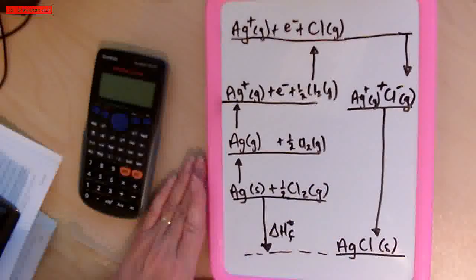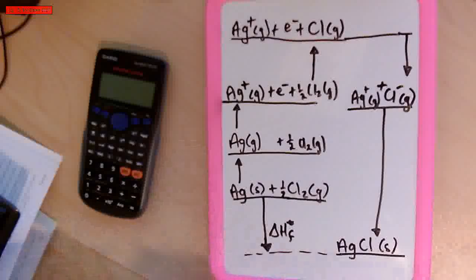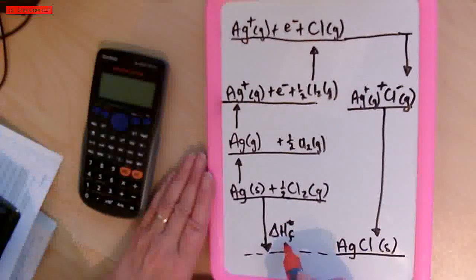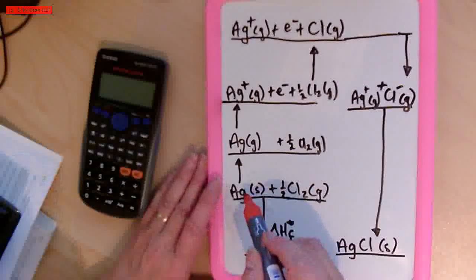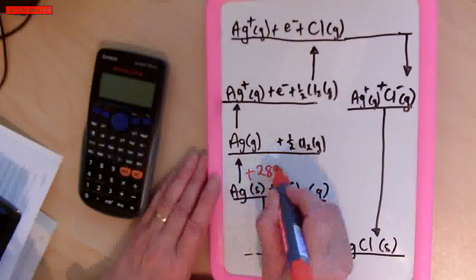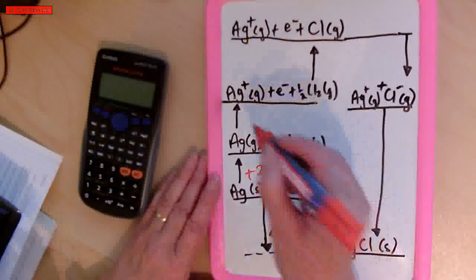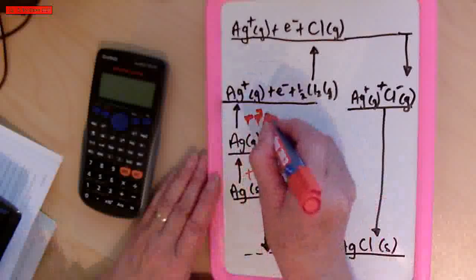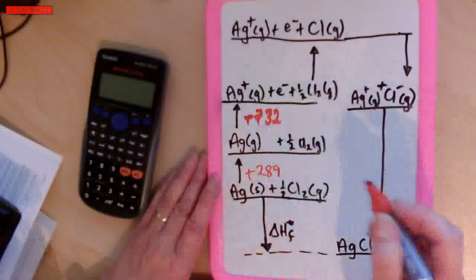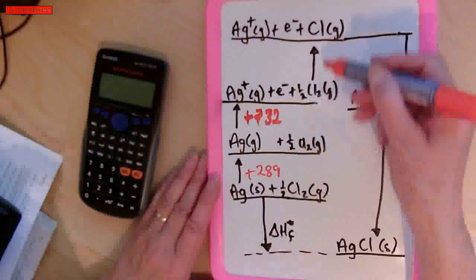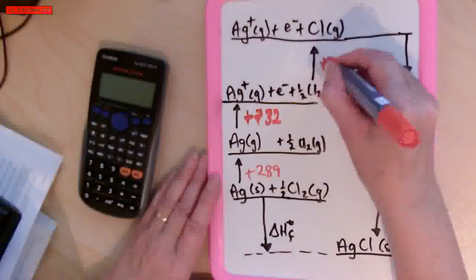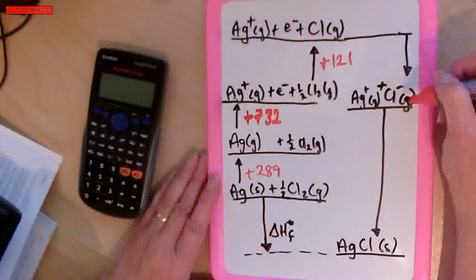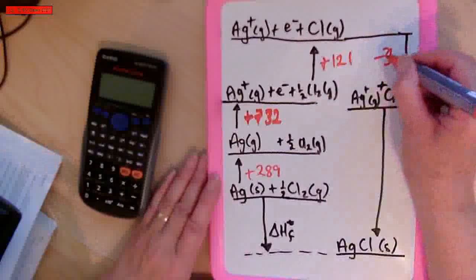Now I can use the table the exam board gave me and work out the lattice enthalpy. The atomisation of silver is +289. The first ionisation energy of silver is +732. The atomisation of chlorine is +121. And the electron affinity for chlorine is −364. Here we have the lattice enthalpy.